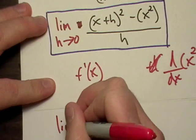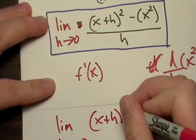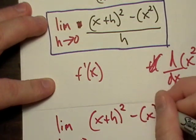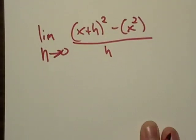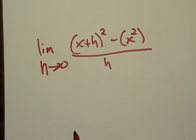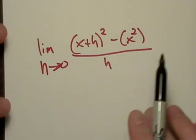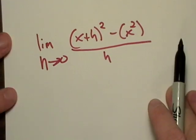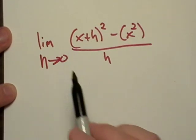We have the limit as h goes to zero. Back from our limit rules, we found that you usually have to do a little bit of messing around because there's usually a catch to just simple substitution, and it looks like in this case it would be in the denominator, giving us a zero denominator.